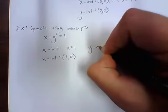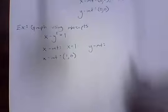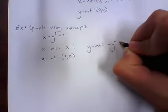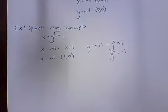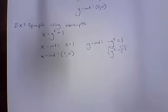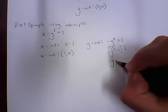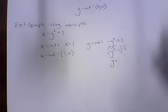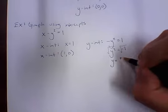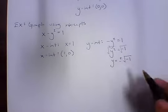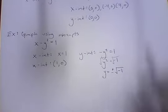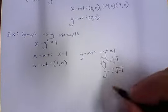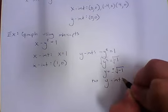To find the y-intercept, we set x equal to 0, leaving negative y squared equals 1. Rearranging gives y squared equals negative 1. Taking the square root of both sides, we get plus or minus the square root of negative 1, which is an imaginary number — not a real number. Since we graph in the real coordinate plane, this means there are no y-intercepts.